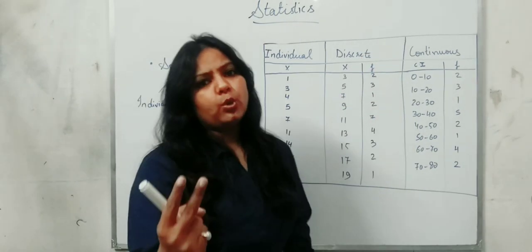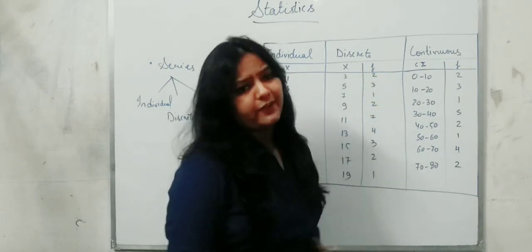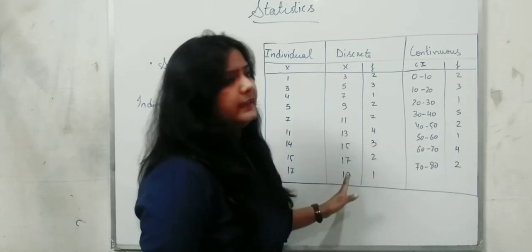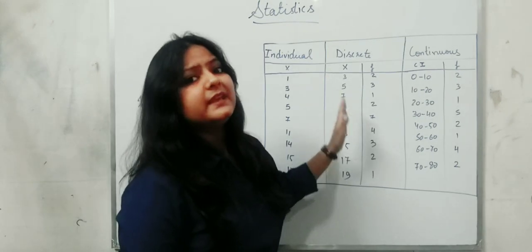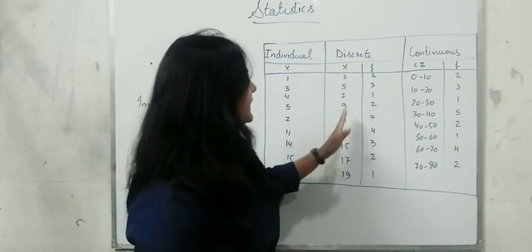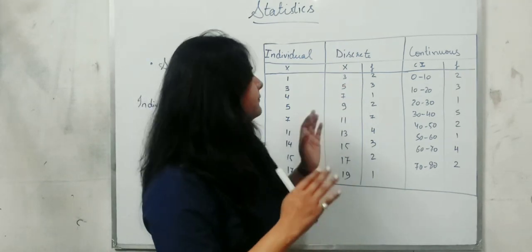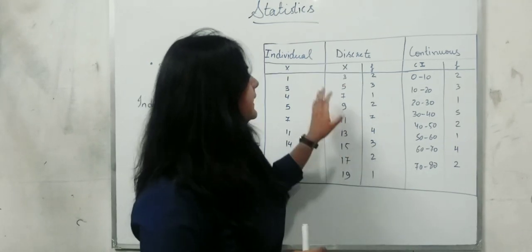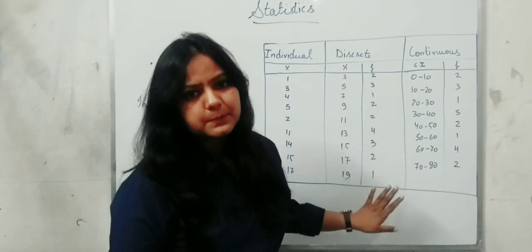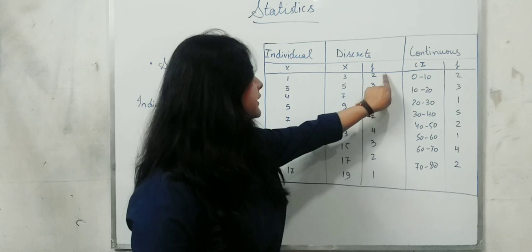Second is Discrete. Discrete means it has two dimensions — so here we will have 2 columns. One is X and the other is F. This is your data — the original data. And what you recognize, you have to classify it. By default, you write your data — for example, you've written a 3.